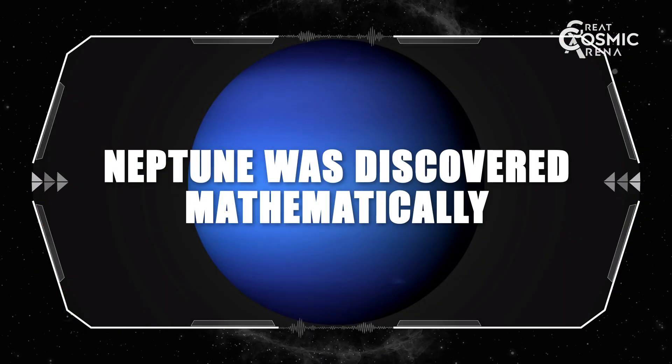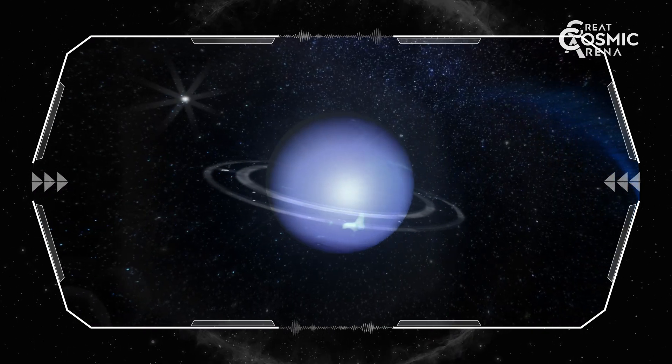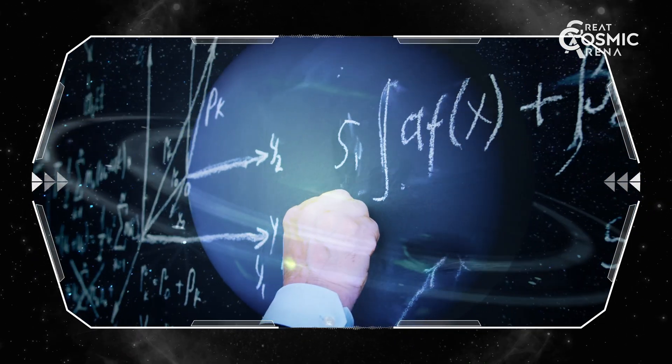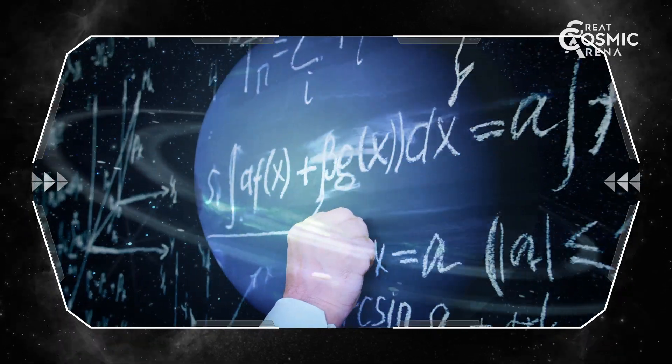Neptune was discovered mathematically before being sighted in a telescope. Neptune's existence was predicted using calculations based on irregularities in Uranus's orbit.